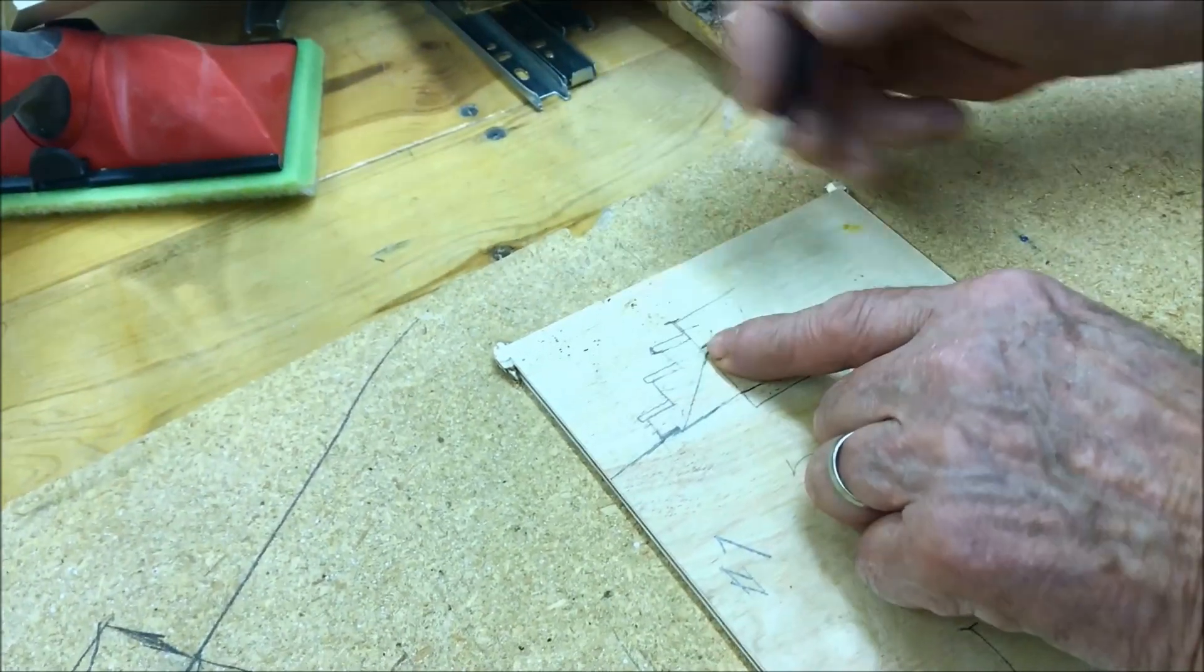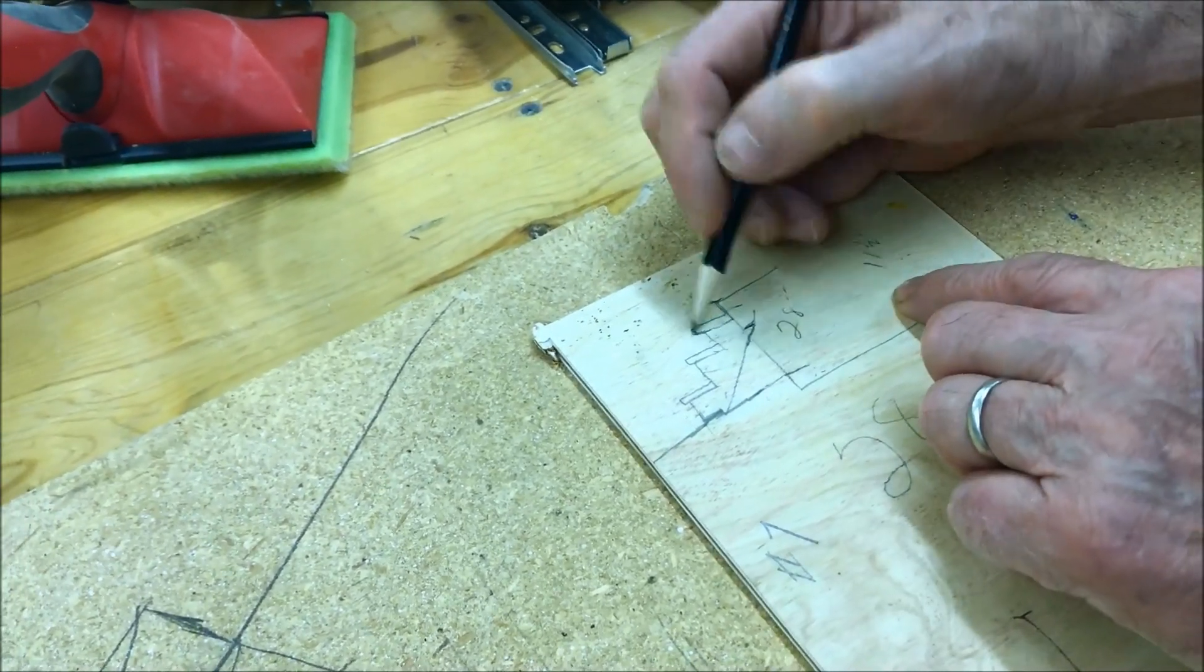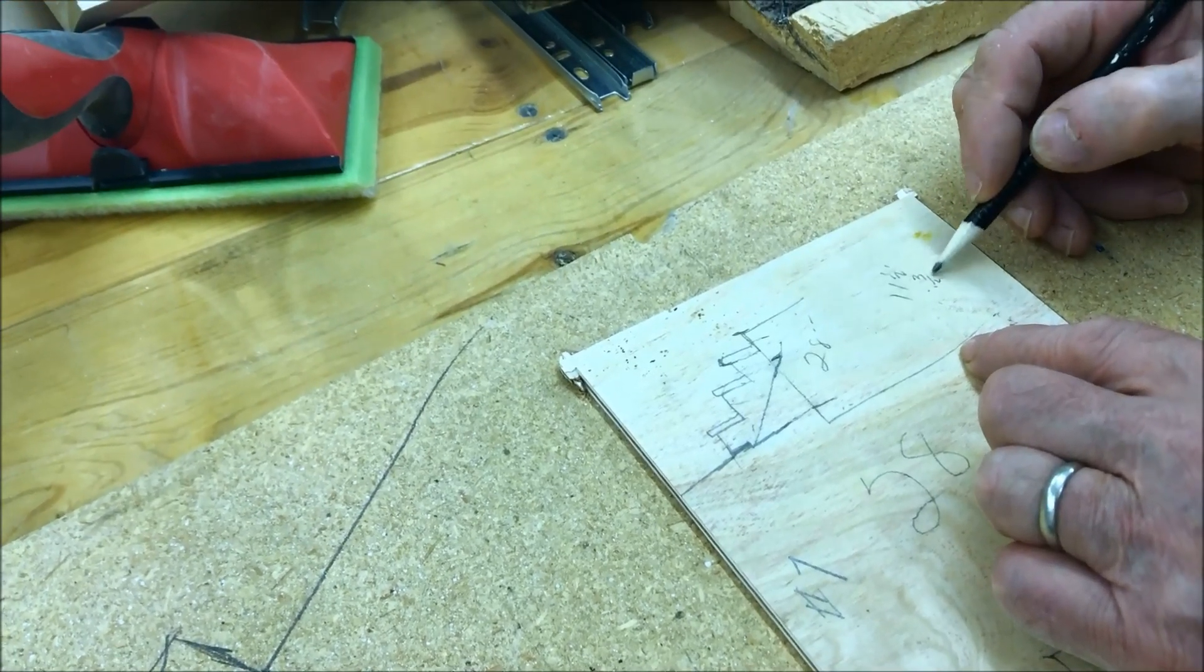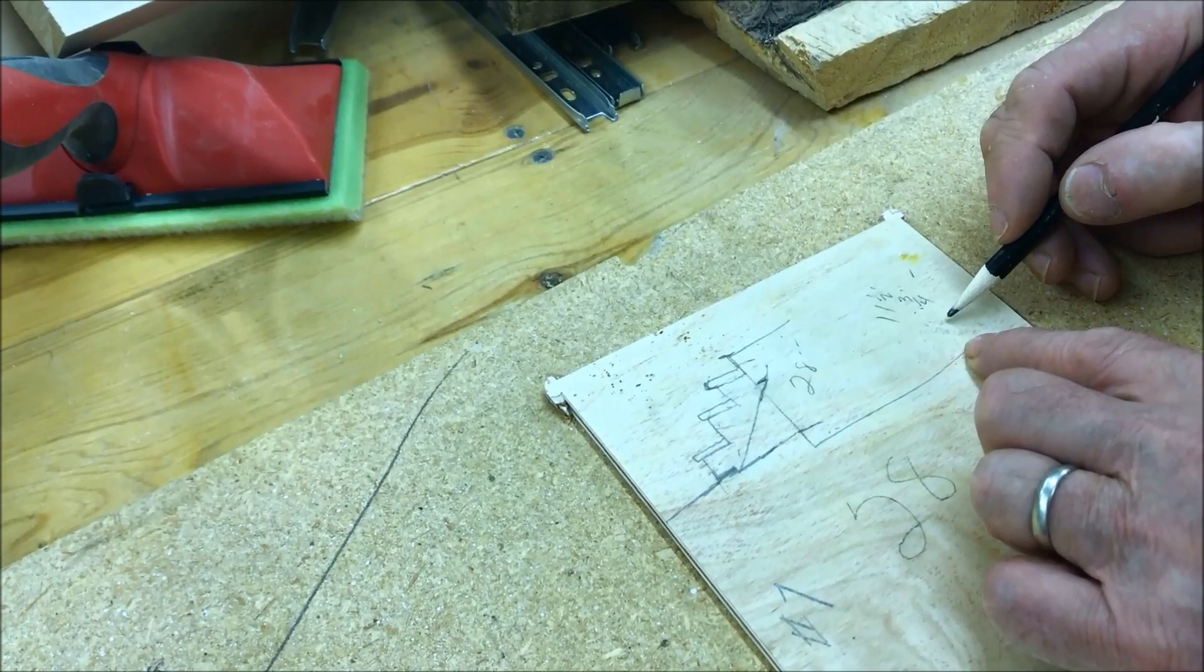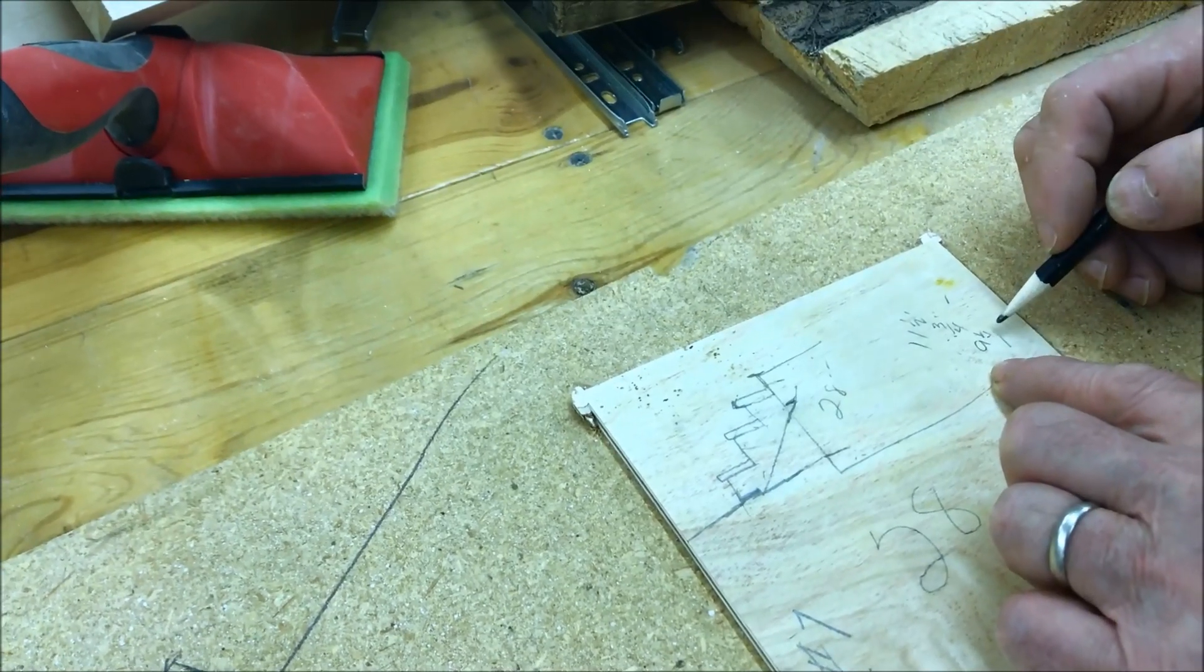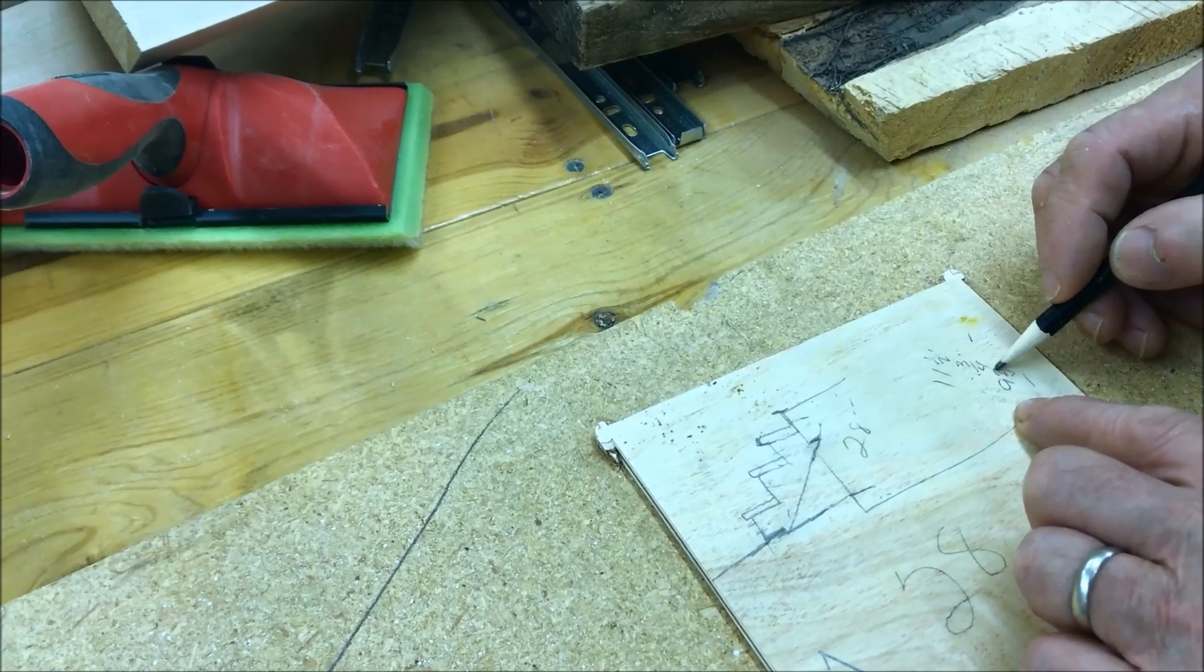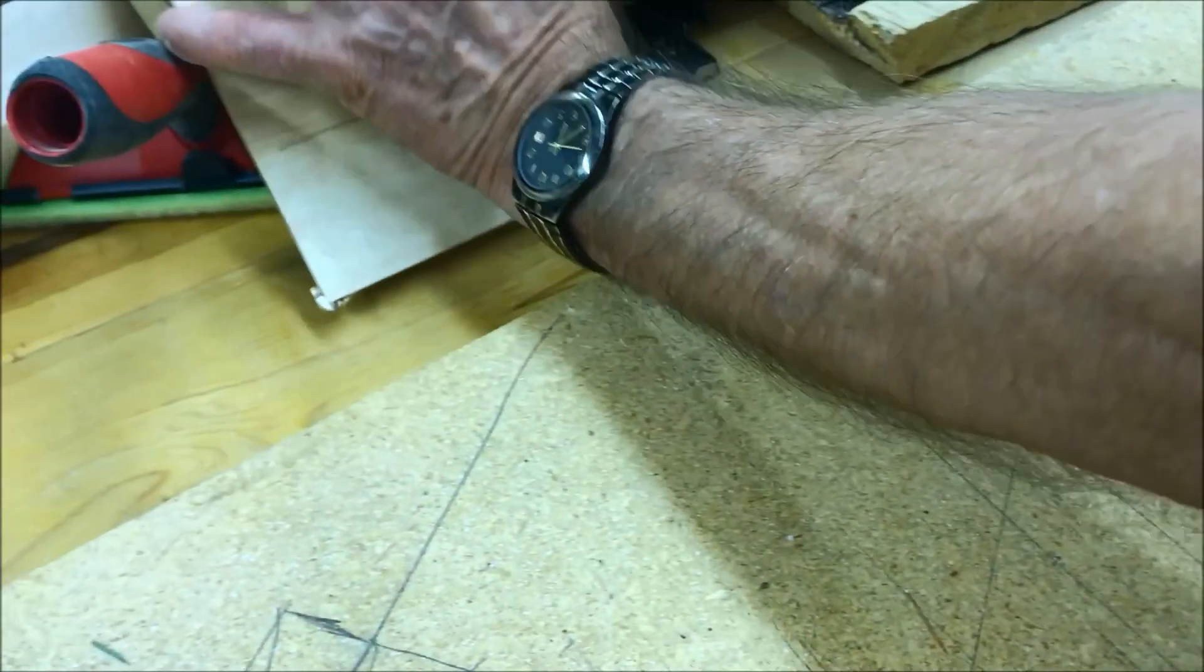So if we're at eleven and a half inch plank minus the three-quarter inch, we would be at, what, nine and a quarter? No, it wouldn't either. Nine and three-quarter? Nine and three-quarter. Okay. Okay, then you take your framing square.